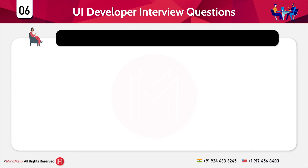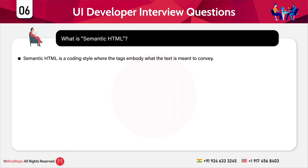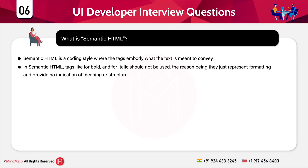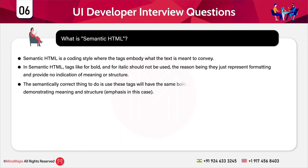The next question is very important: what do you mean by semantic HTML? Semantic HTML is a coding style where tags embody what the text is meant to convey. In semantic HTML, tags like bold and italic should not be used because they just represent formatting and provide no indication of meaning or structure. Semantically correct tags achieve the same bold and italic effects while demonstrating meaning and structure.